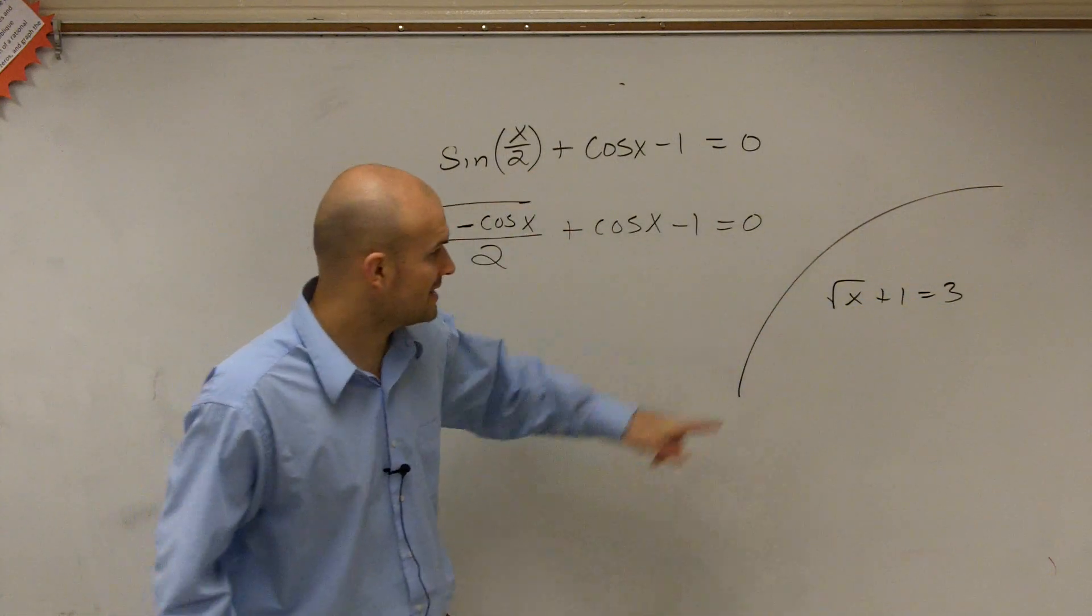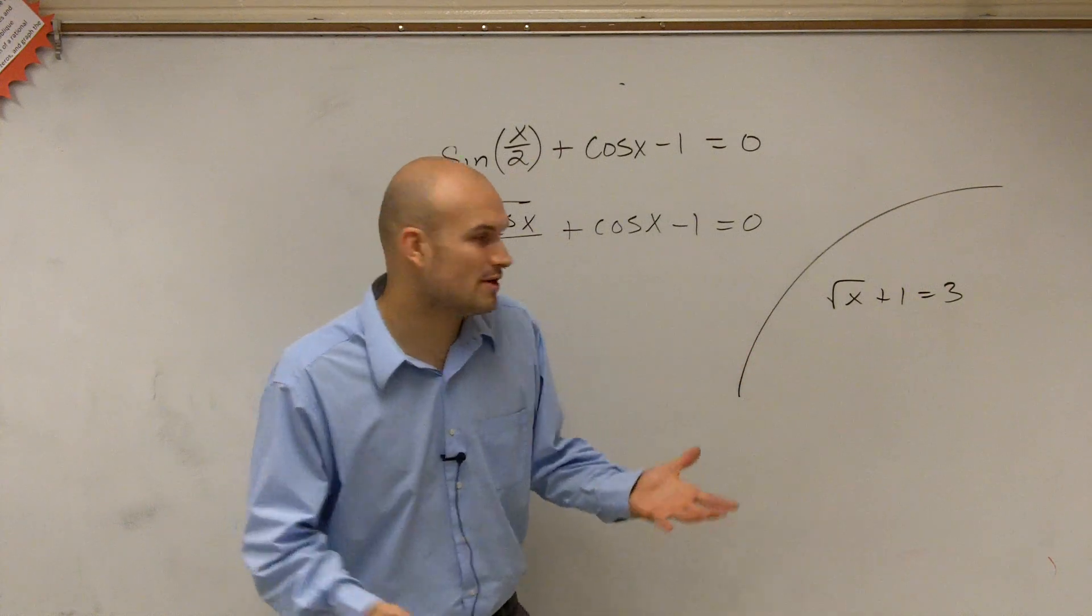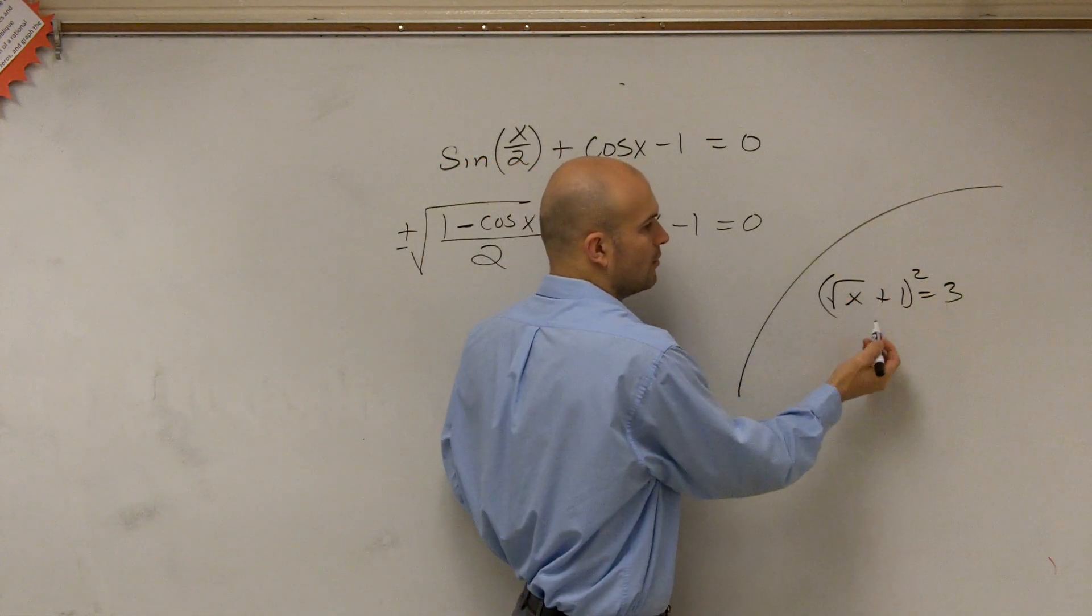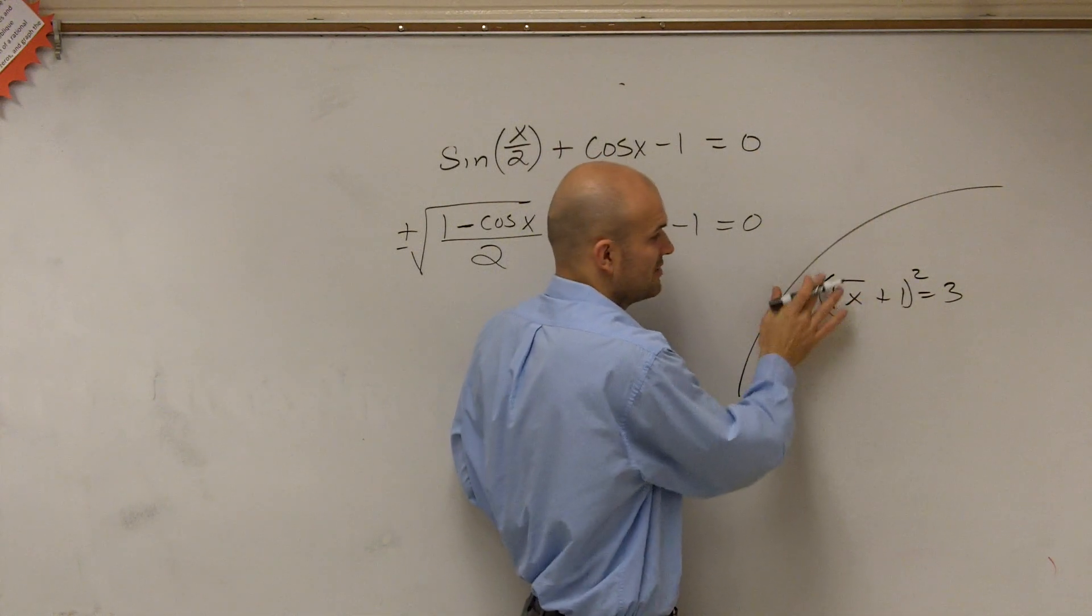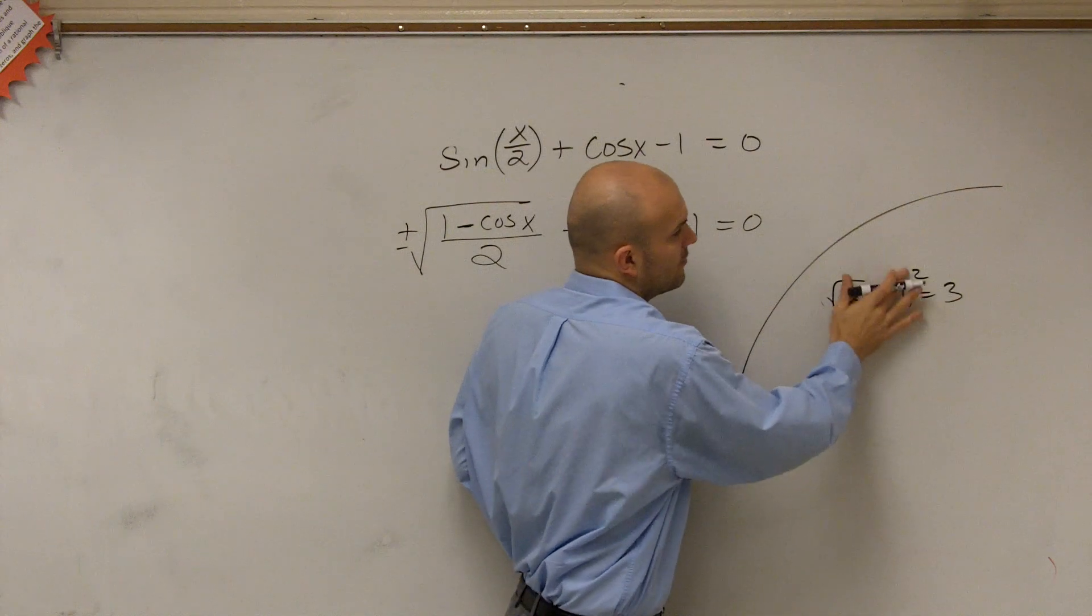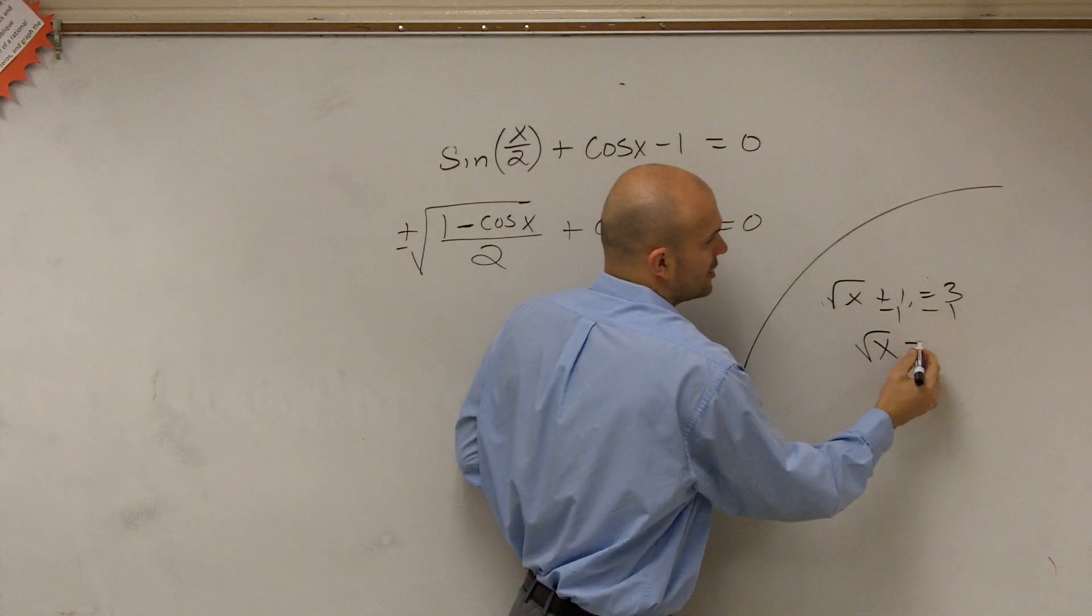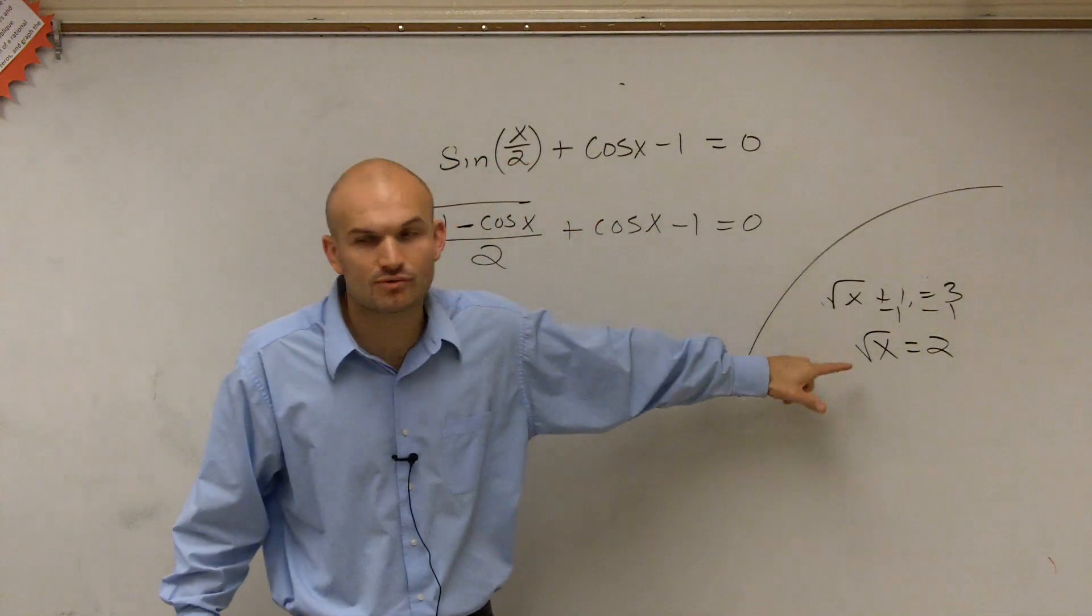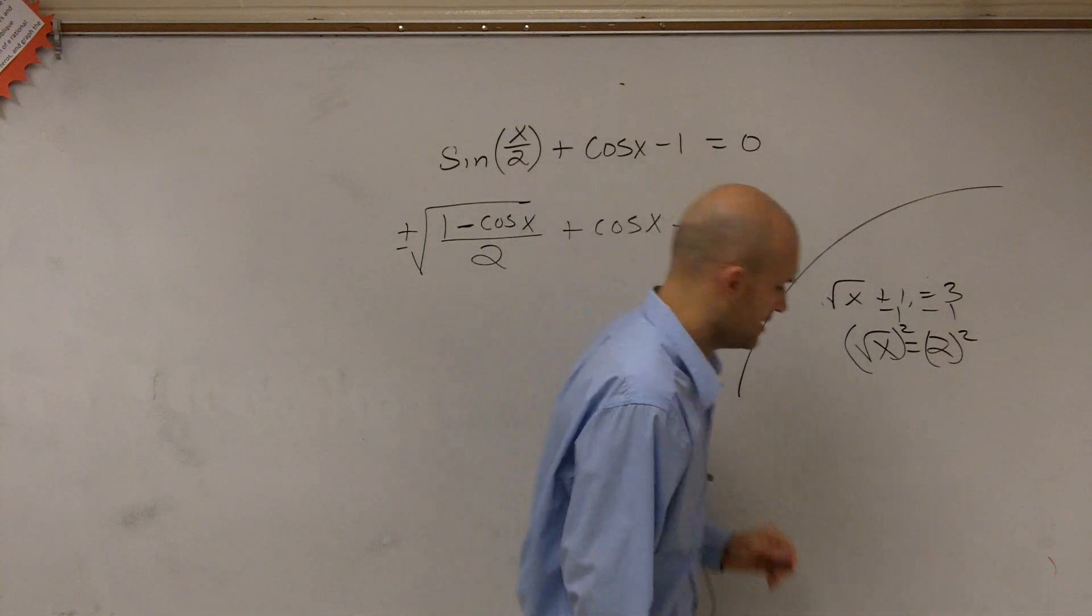You're going to minus 1. Why can't I just square both sides right now and get rid of the square root? Because you can't square both sides because if you square this, well, you're not getting rid of the square root, but this is a binomial squared. So you're going to have to do foil and all that kind of crazy stuff. What you want to do is when we're undoing the square root, you have to isolate your square root. You have to get the square root by itself. Now you can square both sides.